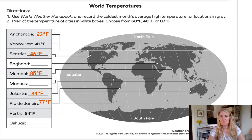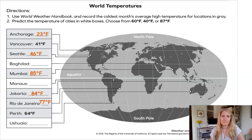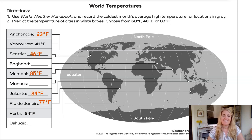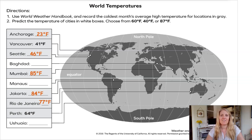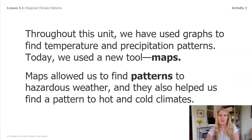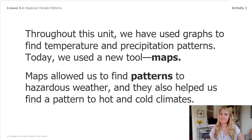Now, if we had to do the next two cities, what would you predict — 40 or 87 degrees for each? Be sure to pause and look for patterns if you need to. I put Manaus at 87 degrees Fahrenheit, and Ushuaia, down in the very southern point of South America, I put 40 degrees Fahrenheit. Throughout this unit so far, we've used graphs to find temperature and precipitation patterns. Today we used a new tool — maps — which allowed us to find patterns for hazardous weather and also helped us find a pattern for hot and cold climates.